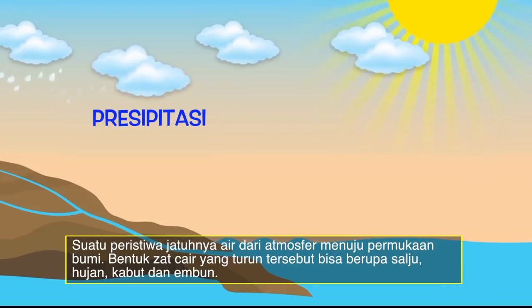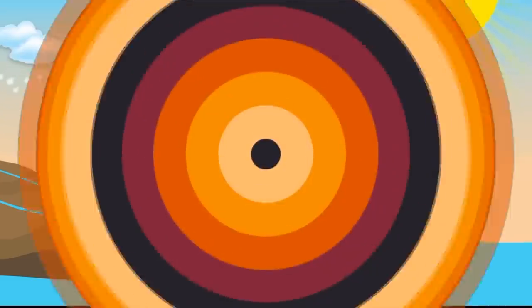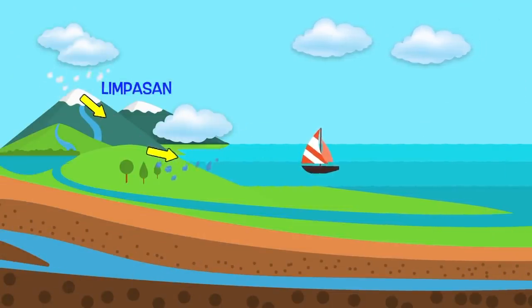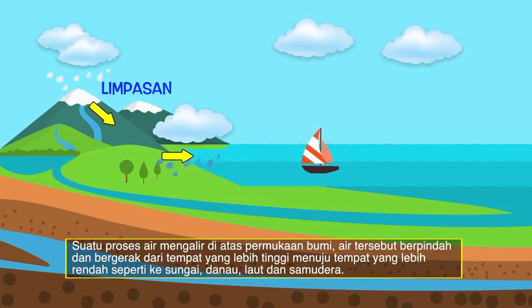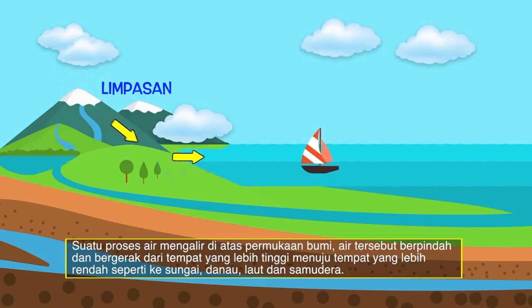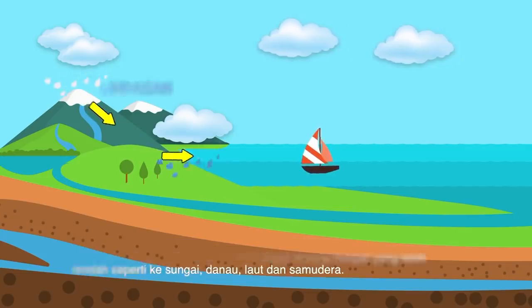Sedangkan bila suhunya di atas 0 derajat Celcius, maka akan jatuh sebagai butiran-butiran air seperti yang biasa kita saksikan. Sobat X-Science, siklus air yang berikutnya adalah limpasan. Limpasan merupakan suatu proses di mana air mengalir di atas permukaan bumi. Air tersebut berpindah dan bergerak dari tempat yang lebih tinggi menuju tempat yang lebih rendah, seperti ke sungai, ke danau, ke laut, bahkan sampai ke samudera.